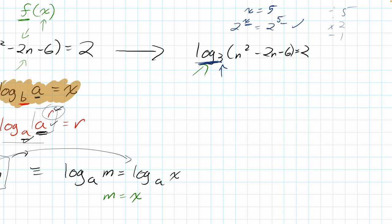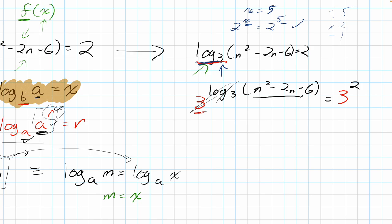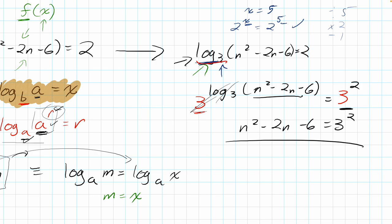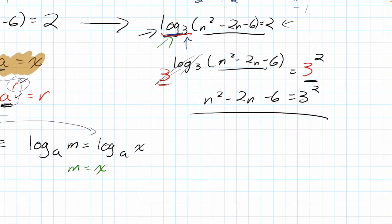I'll use this fact to get rid of the log. I raise both sides to base 3. The left side becomes 3 to the power of (log base 3 of (n² − 2n − 6)), and the log base 3 cancels, leaving just the argument n² − 2n − 6. On the right side, 3 to the power of 2 gives 3². So now I have n² − 2n − 6 = 3², which is much more tractable.